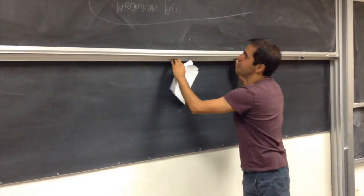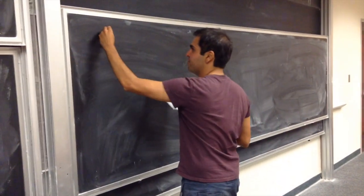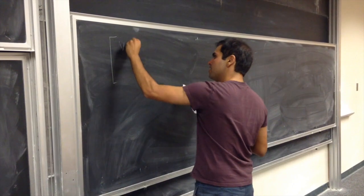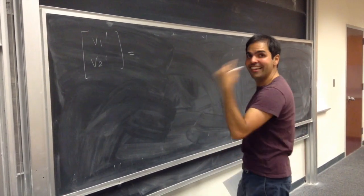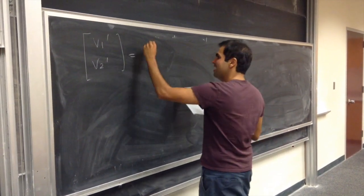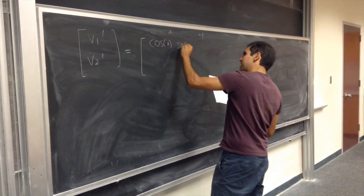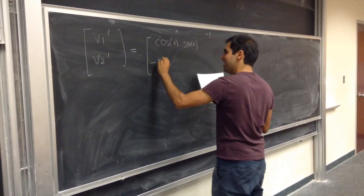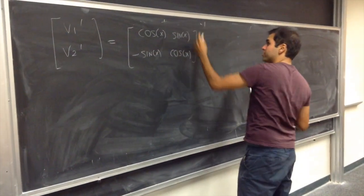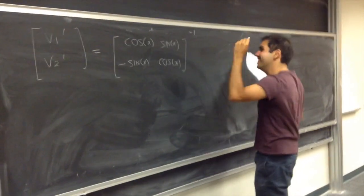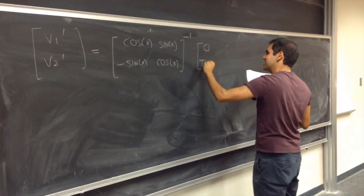In the 2×2 case it's really not that bad. We solve for [v1', v2']ᵀ by multiplying by the inverse of the matrix [cos(x), sin(x); −sin(x), cos(x)], applied to [0, tan(x)]ᵀ. The coincidence here is that there's already a minus one present. For a 2×2 matrix, the inverse of [A, B; C, D] is 1/(AD − BC) times [D, −B; −C, A].